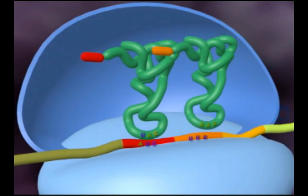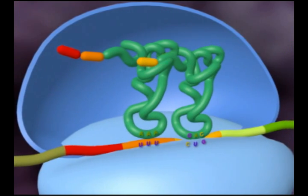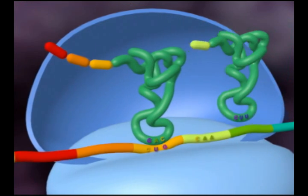As the ribosomal complex moves downstream on the mRNA molecule, tRNA shuttles each individual amino acid as specified by the code contained on the mRNA.